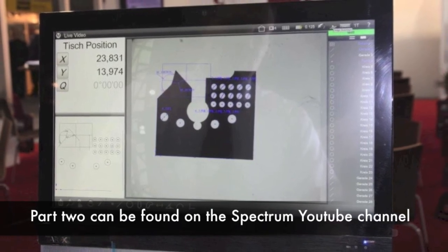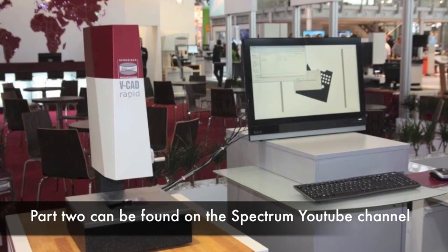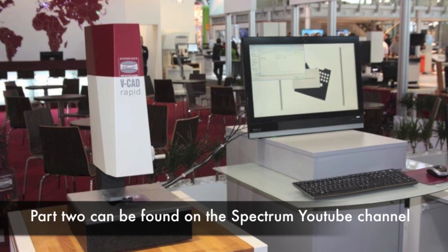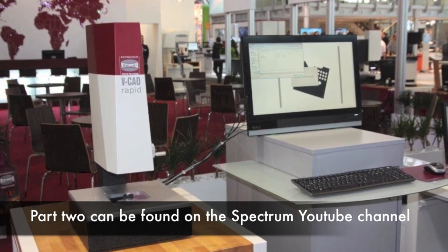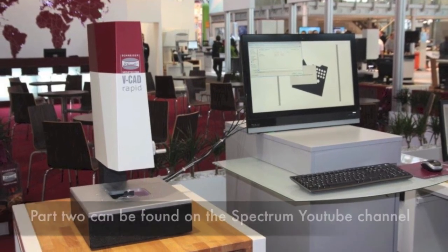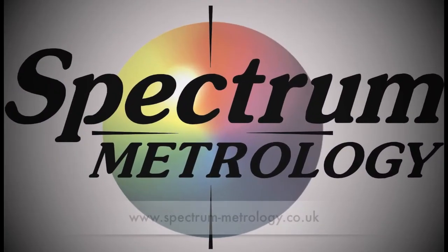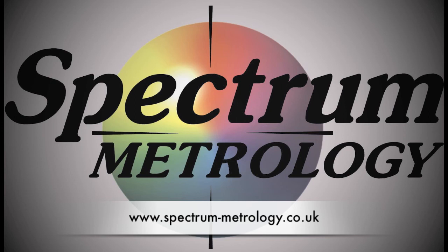Part two of this video shows how the system can be taught to automatically recognize a unique pattern of a component and carry out a sequence of measurements in a single click, even if the component is placed the wrong way round. For more information, please go to our website www.spectrum-metrology.co.uk.